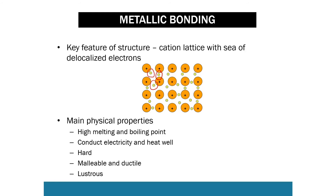Finally, metals are lustrous, meaning that they're shiny. This is because the free electrons reflect the light, making them appear shiny. Thanks for watching this video.